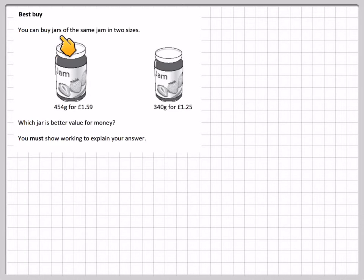You can buy jars of the same jam in two sizes: 454 grams for £1.59 and 340 grams for £1.25. We often face this problem in the supermarket - which is the better value for money?